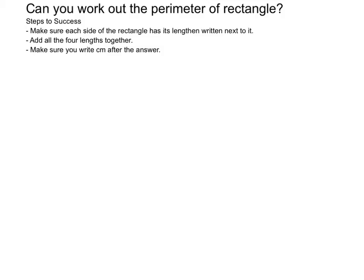The first step is to make sure each side of the rectangle has its length written next to it. You'll see what this means in a minute. Then you need to add all four lengths together. Make sure you write centimeters after the answer.